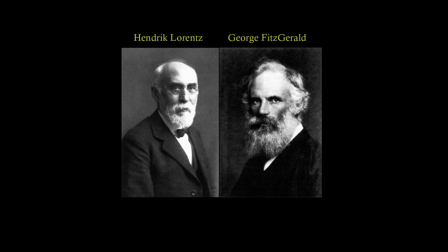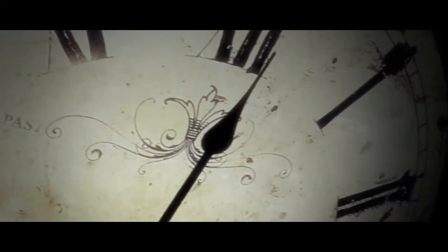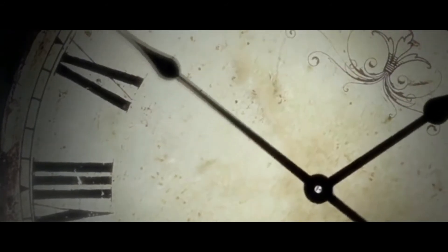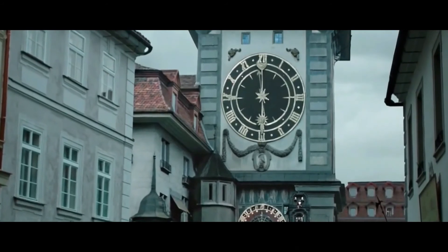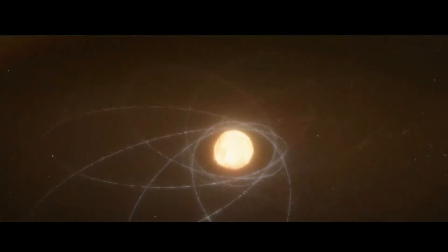George Fitzgerald and Hendrik Lorentz were the first to suggest that bodies moving through the ether would contract and that clocks would slow. This shrinking and slowing would be such that everyone would measure the same speed for light no matter how they were moving with respect to the ether. It was a clerk at the Swiss patent office in Bern named Albert Einstein who removed the idea of ether and solved the previous problems about the speed of light. Einstein began to think about how moving observers see events differently from stationary observers.